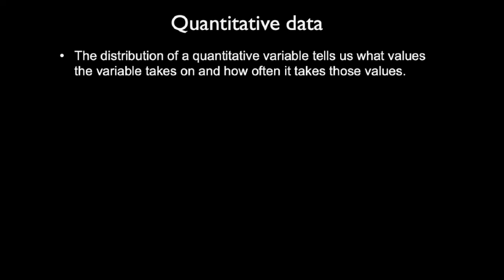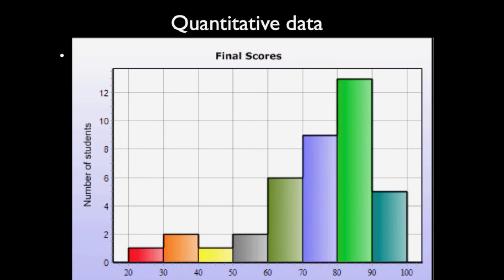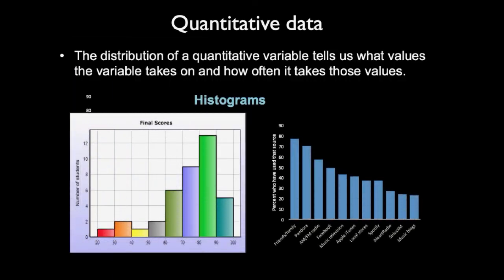For quantitative data, the distribution tells us what values the variable takes and how often it takes those values. Here we also use two graphs. The first is histograms — this is a histogram showing final scores: number of students versus scores. Now you'll see the difference between histograms and bar graphs. In a histogram, there are no spaces between bars, but in bar graphs there is space between every bar. That is the main difference. We use bar graphs for categorical variables and histograms for quantitative variables.